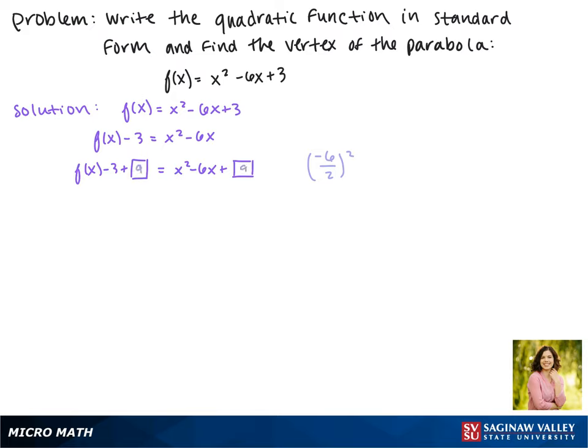This gives us f(x) plus 6 equals, and then factoring this trinomial we get x minus 3, all squared.